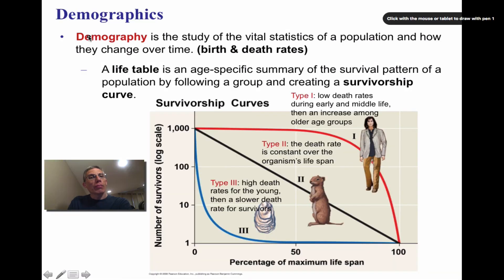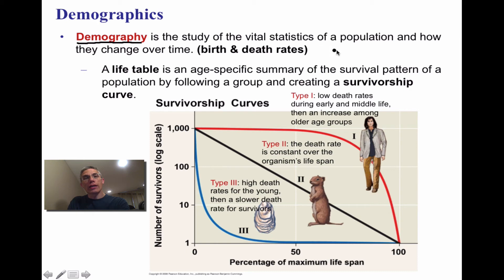In population ecology, demography refers to the study of the vital statistics of a population and how they change over time — essentially the birth and death rates of organisms. From this data, we create a life table, which is an age-specific summary of the survival pattern of a population, used to create a survivorship curve.